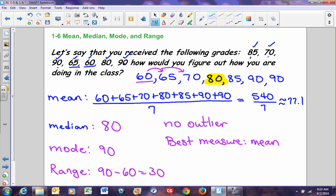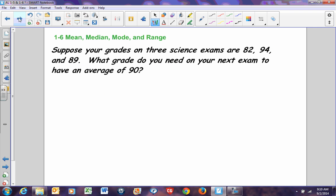So, to recap, we found our mean, we found our median, we found our mode and range, determined there was no outlier. Therefore, since there was no outlier, the best measure is your mean. Let's look at another problem.